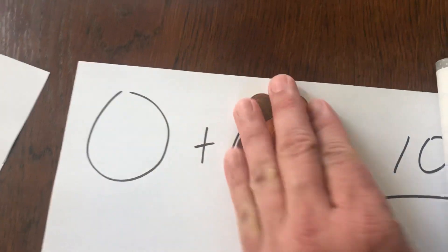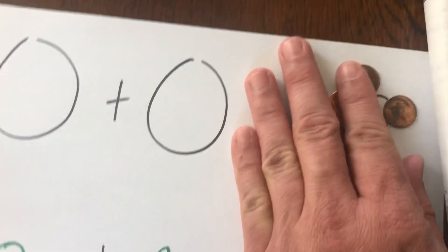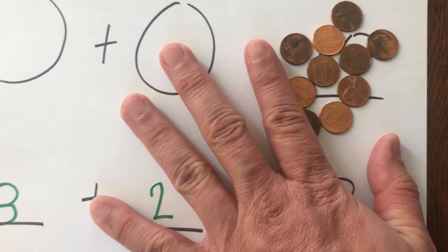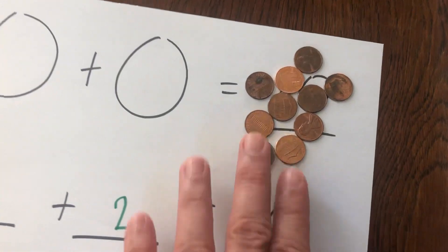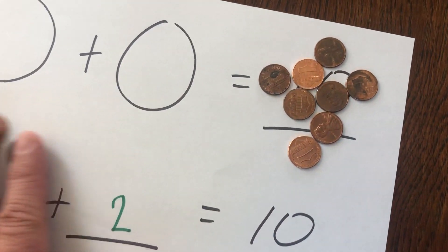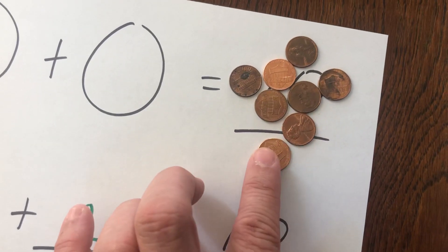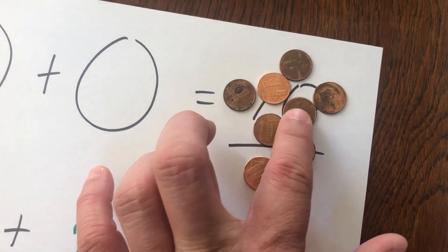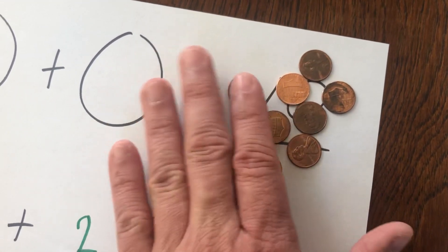So if on this number right here, we had ten and we were going to do subtraction, what could we do? Well, we could take away two. And if we take away two, what do we have left? One, two, three, four, five, six, seven, eight. So ten take away two equals eight.